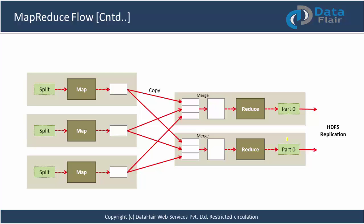If there are multiple reducers, the output of each mapper will go to all the reducers — one part will go to reducer one and another part will go to reducer two. So if we have two reducers, each reducer will receive data from all the mappers. There is a certain basis on which data is written to reducer one versus reducer two — we will discuss that as well. The rest of the end-to-end flow is exactly the same as what we just talked about.